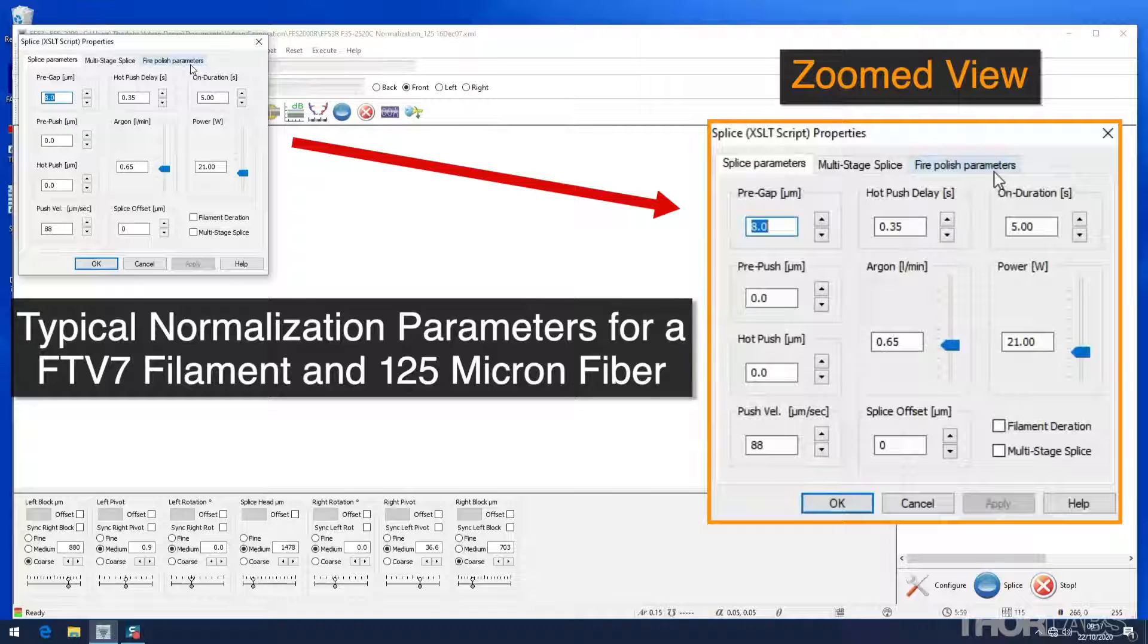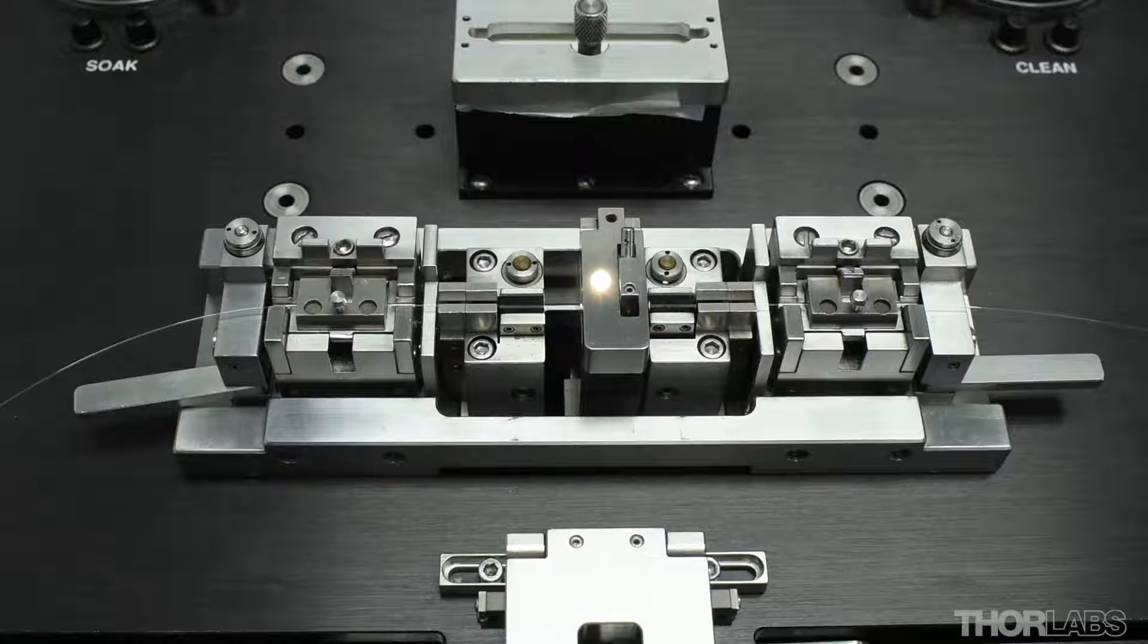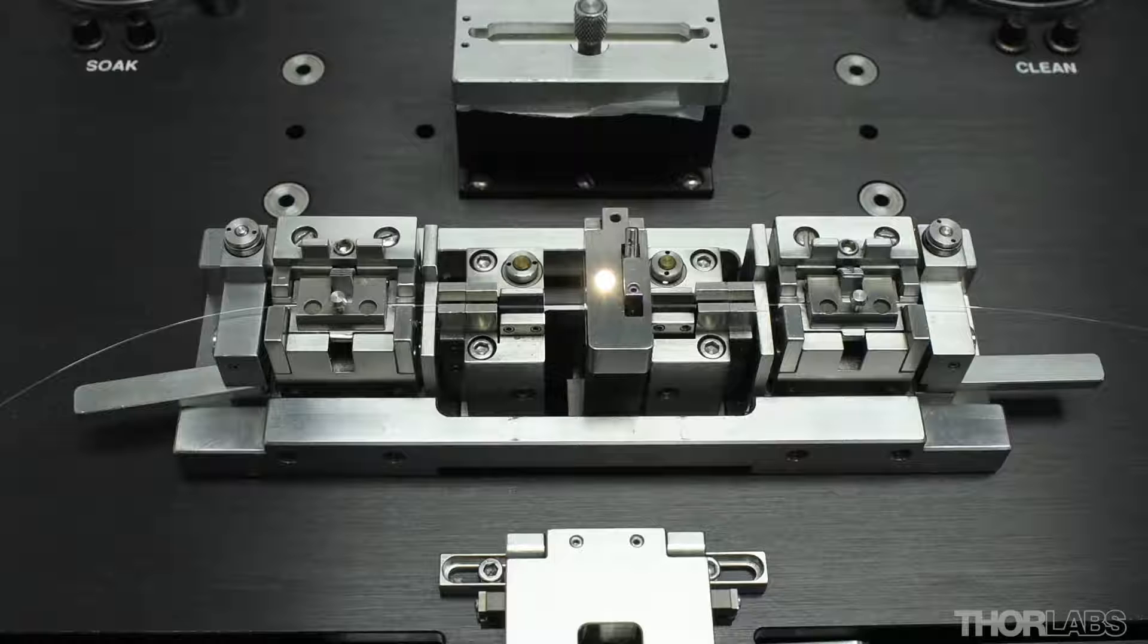Filament power offset is a constant which is automatically added to the splice power of the splice file. This allows two filaments with different thermal response to run the same file with consistent results.